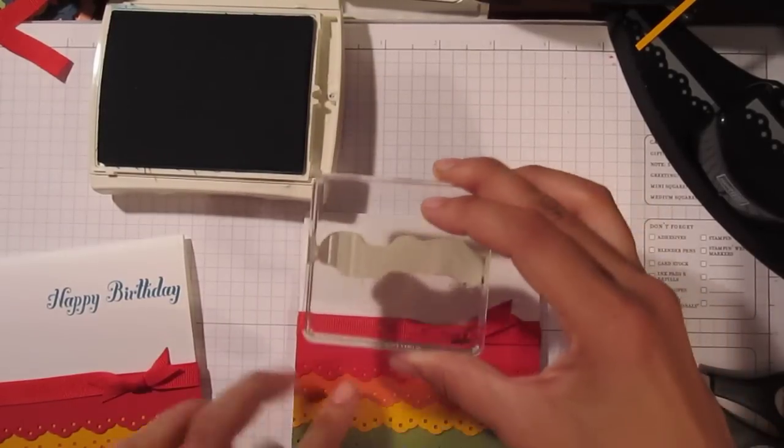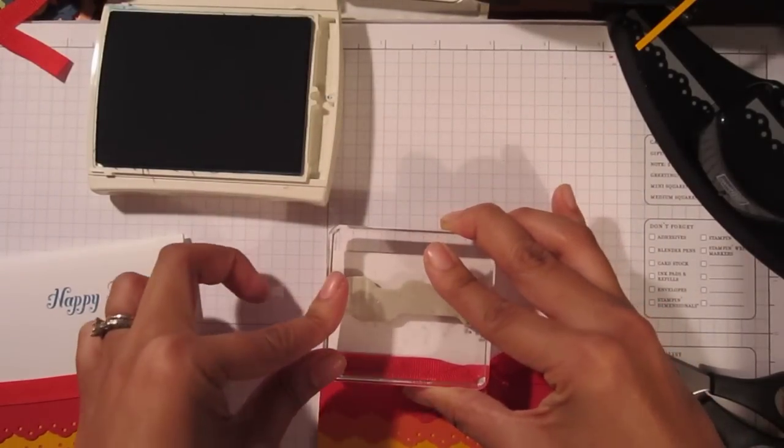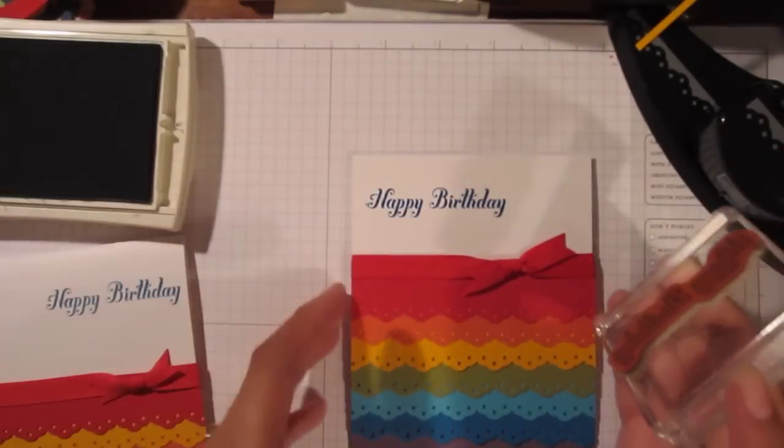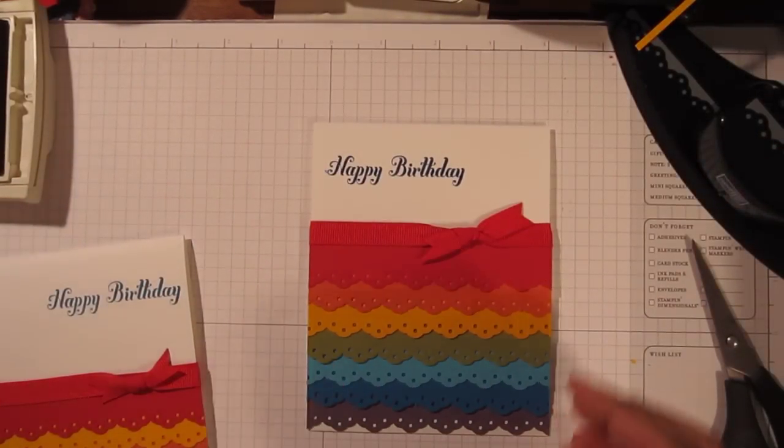I'm going to stamp it right here at the top right corner of my card. Actually, I have the bow on this side. So I'm going to stamp this on the top left corner of my card. Because I have clear blocks, I can tell exactly where I'm stamping. Perfect. Isn't that nice and clean and simple and beautiful? And the colors are so vibrant.